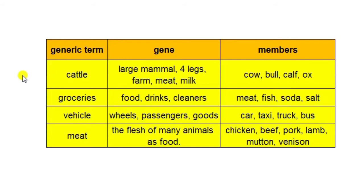I'll give you the first one. In my view, cattle means it's a large animal, it has four legs, it's a mammal, you can find it on the farm, it has edible meat, and some cattle — the females — produce milk.